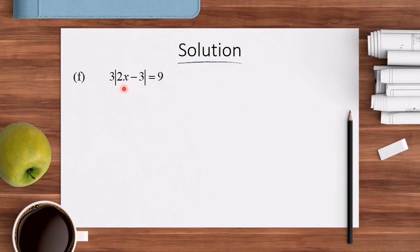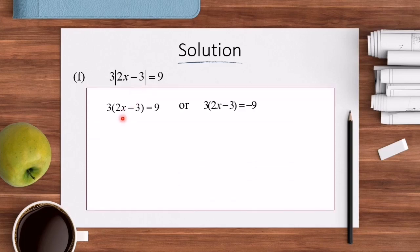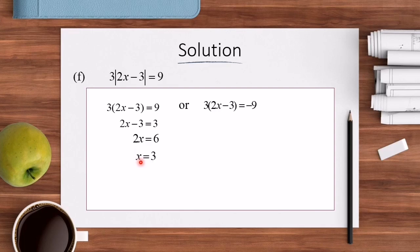Now let's look at the solution for Question F: 3|2x − 3| = 9. Since this is 1 absolute value, we straight away use the basic definition. So 3(2x − 3) = 9 or 3(2x − 3) = −9. For the first: 2x − 3 = 3, then 2x = 6, so X = 3.